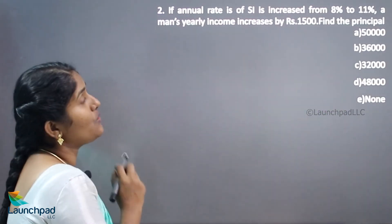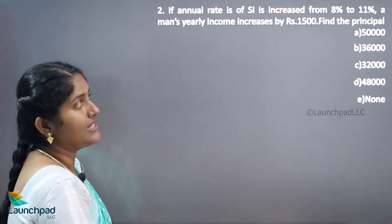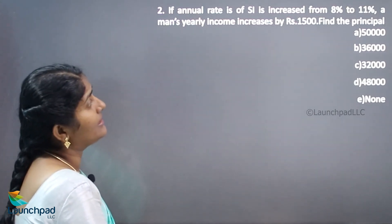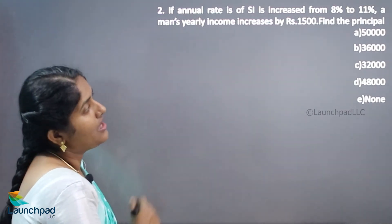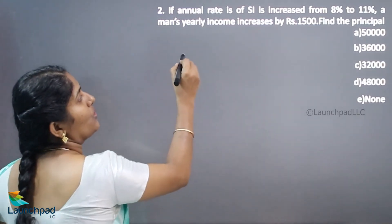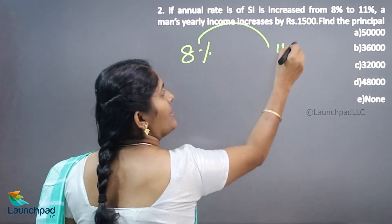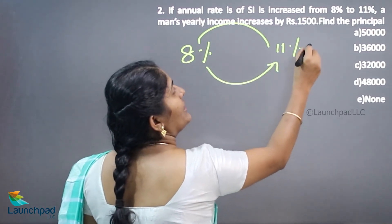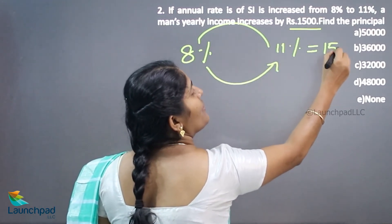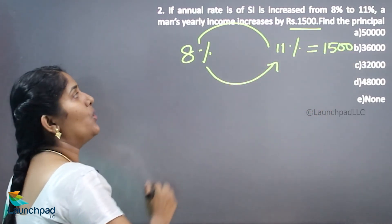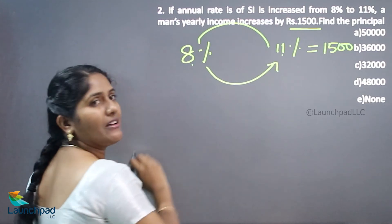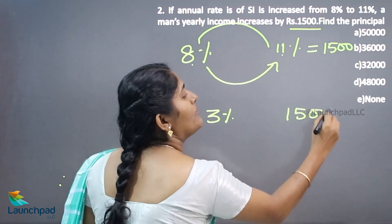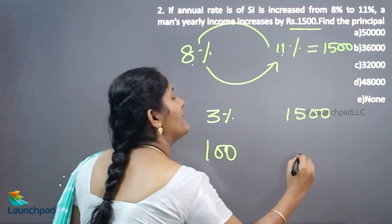Moving on to the next question: the annual rate of SI is increased from 8 percent to 11 percent, and a man's yearly income increased by 1500 rupees. Find the principal. We don't know the principal amount. The increment affects the revenue by 1500 rupees. The difference between 8 percent and 11 percent is 3 percent, so the 3 percent value equals 1500 rupees.